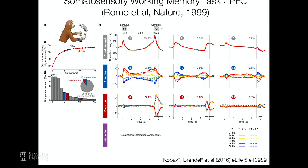Interestingly, if you apply this method to more sensory or motor areas, the amount of variance in the condition-independent component decreases. It's as if we understand those sensory and motor areas better — or rather, we can control activity in them better. In the very executive areas like PFC we can't control as much of what's happening.